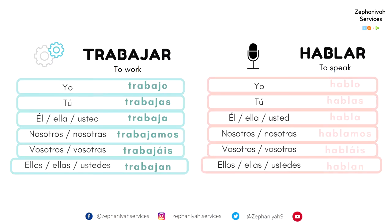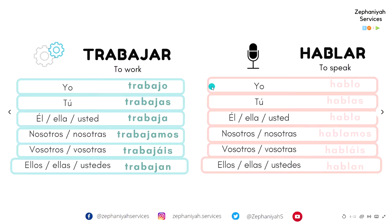Now let's do the next two verbs: trabajar y hablar. Yo trabajo, tú trabajas, él trabaja, nosotros trabajamos, vosotros trabajáis, y ellos trabajan. Fantástico. Now let's go with the verb hablar. Yo hablo, tú hablas, él habla, nosotros hablamos, vosotros habláis, ellos hablan. Muy bien.